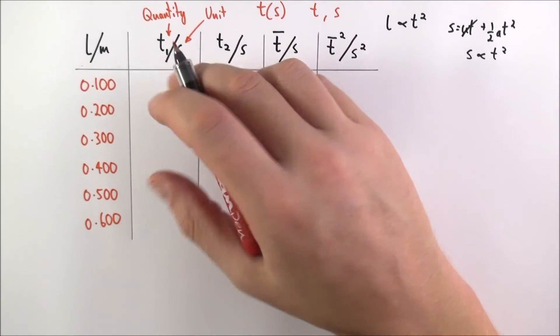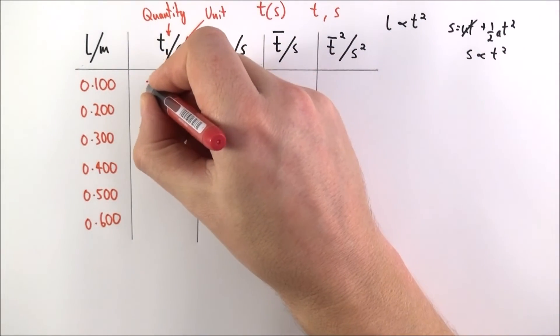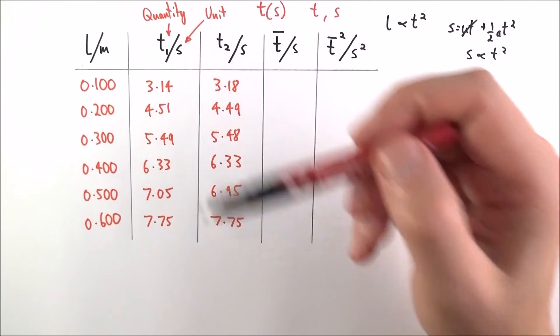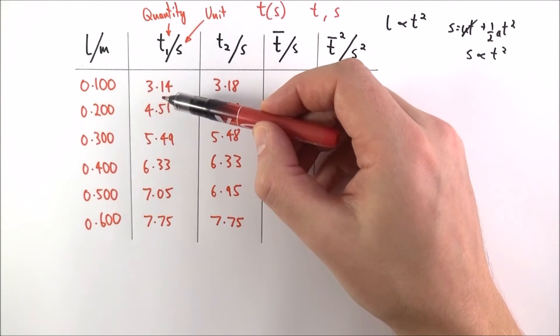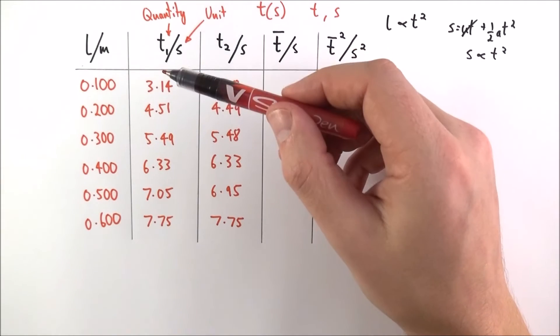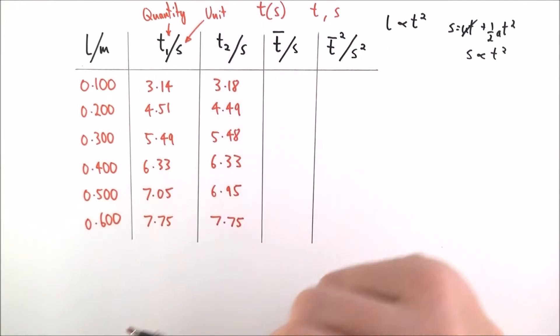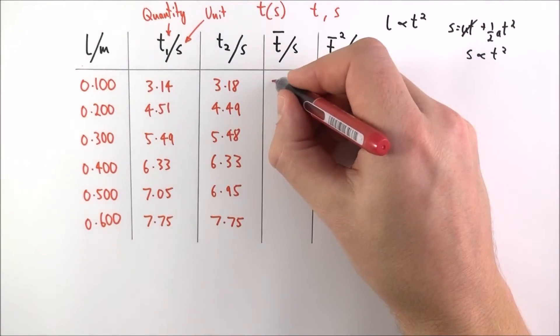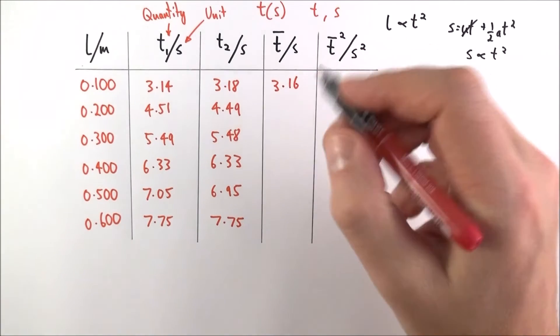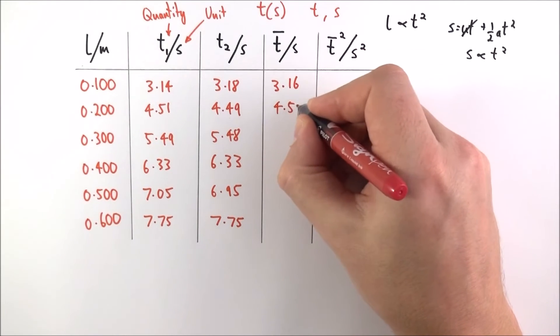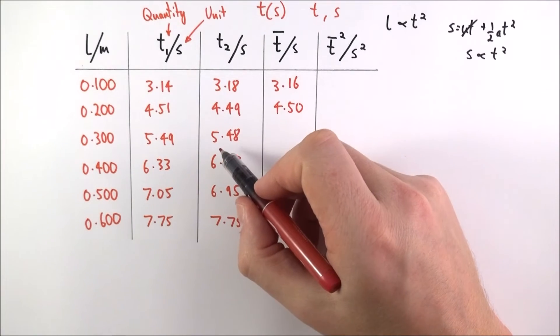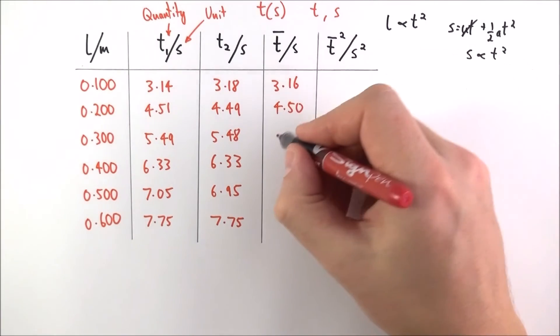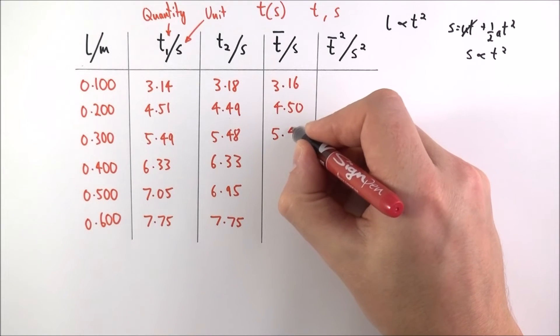You then might do the experiment and you might get values of t. So here we have some data and again I've put all of these to two decimal places which is basically the resolution of that stopwatch that we may be using to record time. I can then work out the mean value which is simply this value added to that value divided by 2. So in this case this one's going to be equal to 3.16. This one here is going to be equal to 4.50. The mean value of these two values is 5.485 but what I'm going to do is I'm going to round it up to keep it to the same amount of significant figures. So in this case it's going to be equal to 5.49.